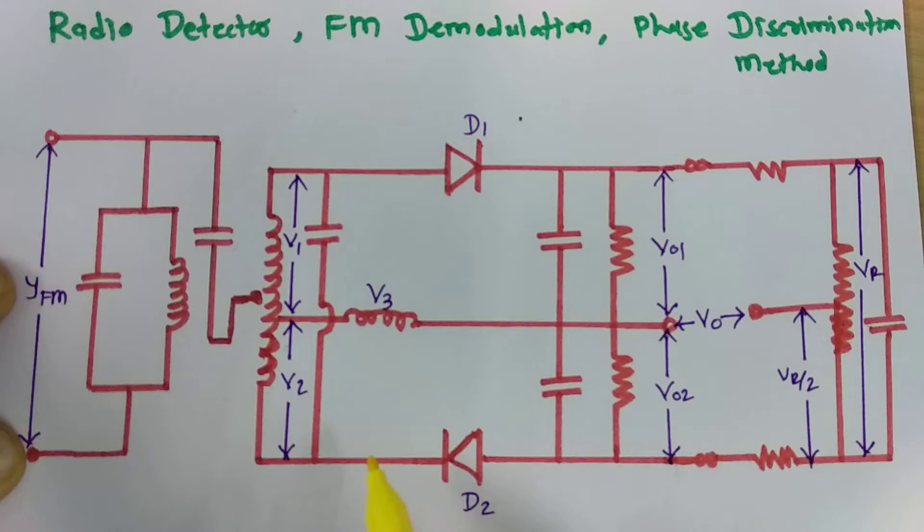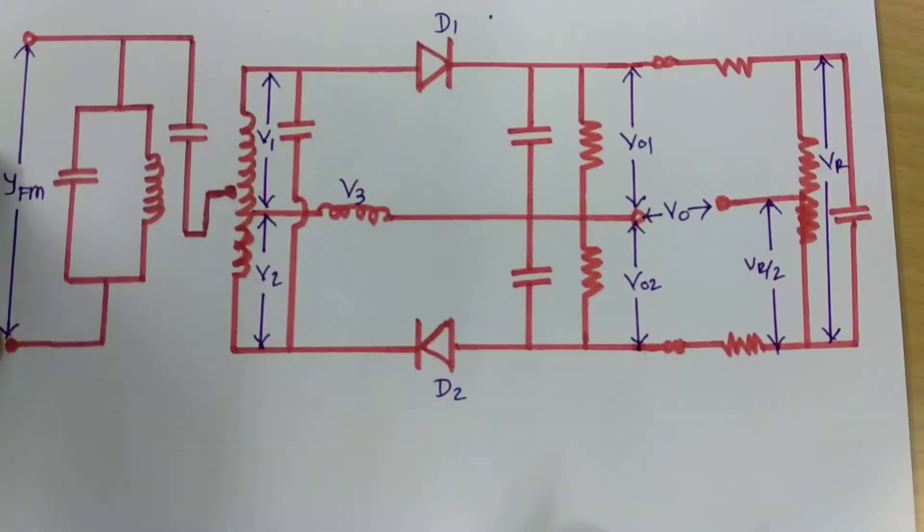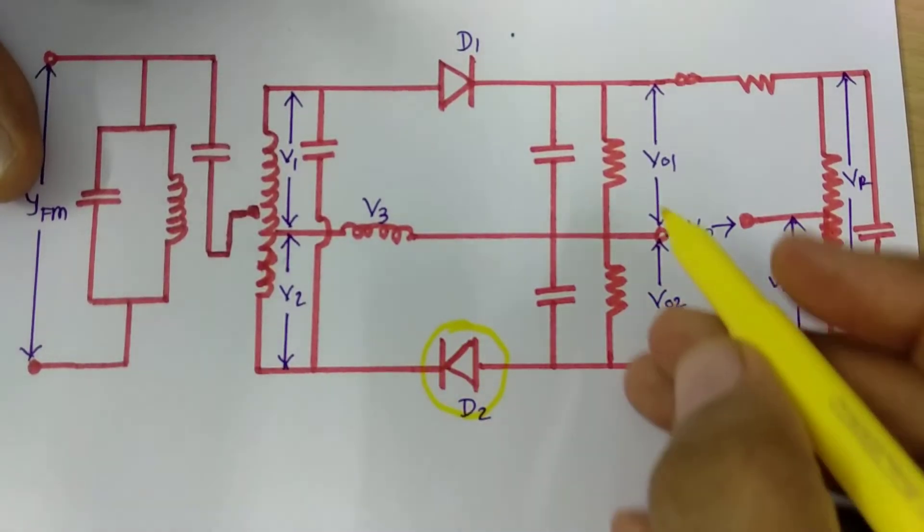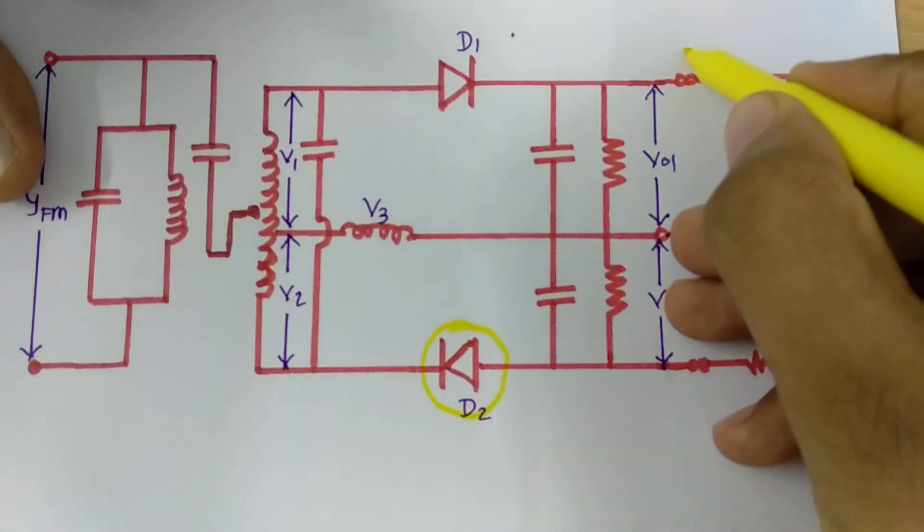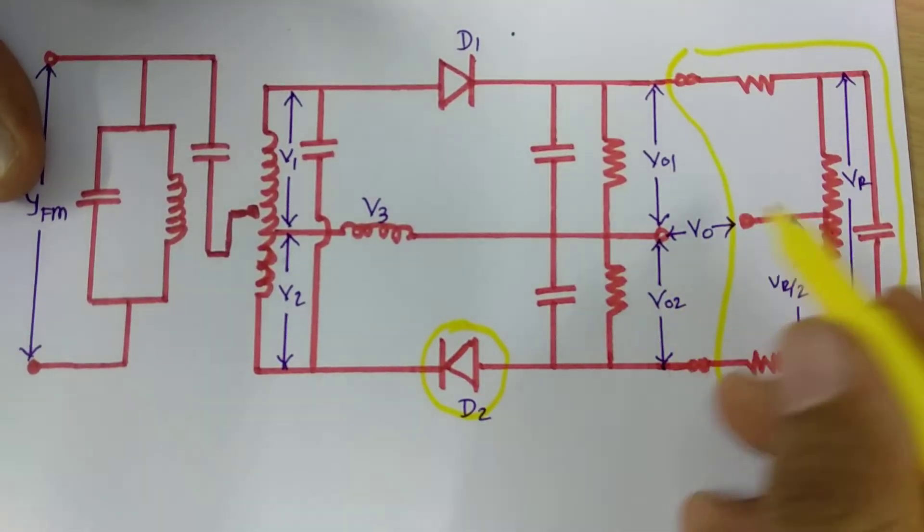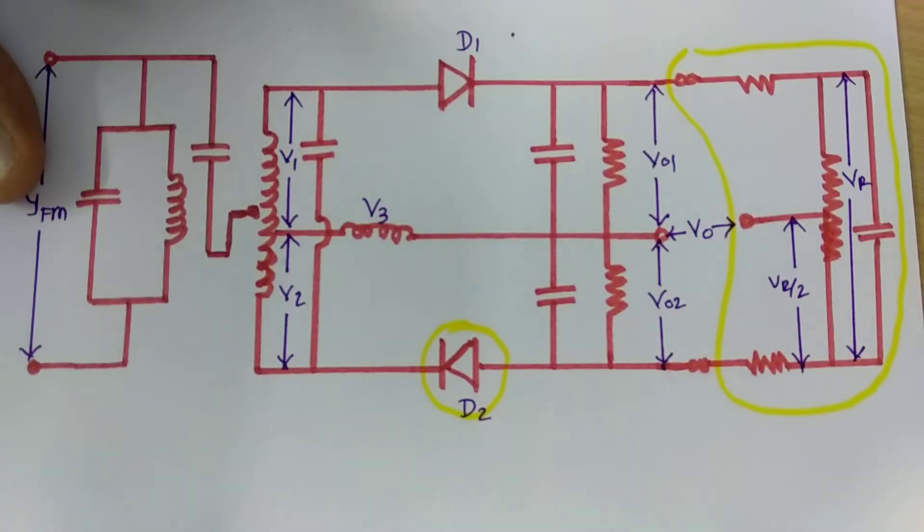So there are few changes that we have done with respect to Foster-Cilley demodulation technique. This changes are you can see this diode now that is in opposite polarity. So this is one change and second is now we are connecting this circuit. So this circuit that is not there in Foster-Cilley demodulation technique. So these two changes is what we have brought in the radio detector.